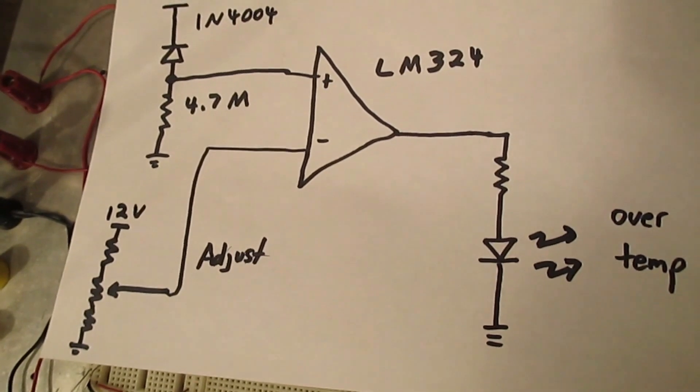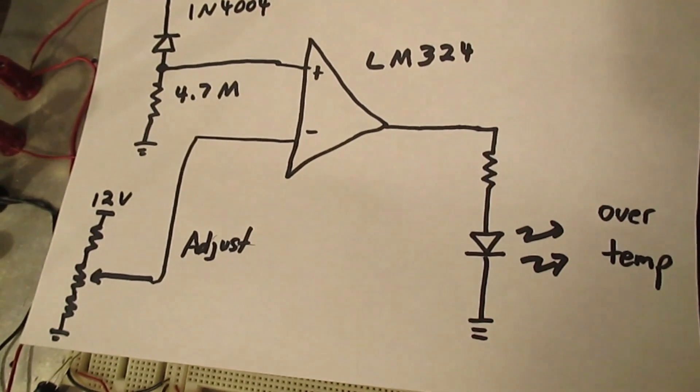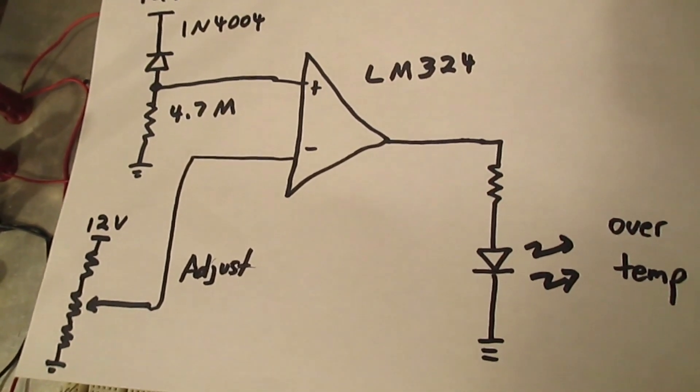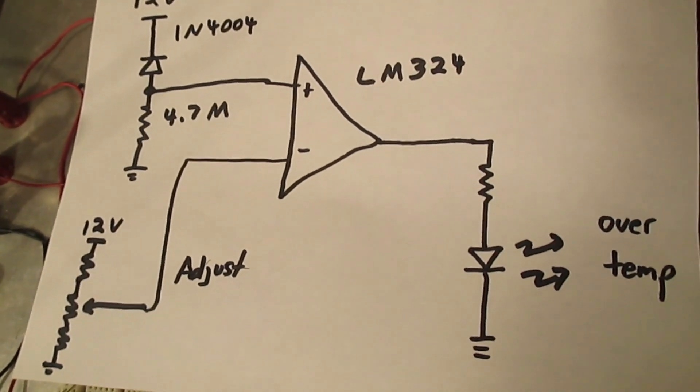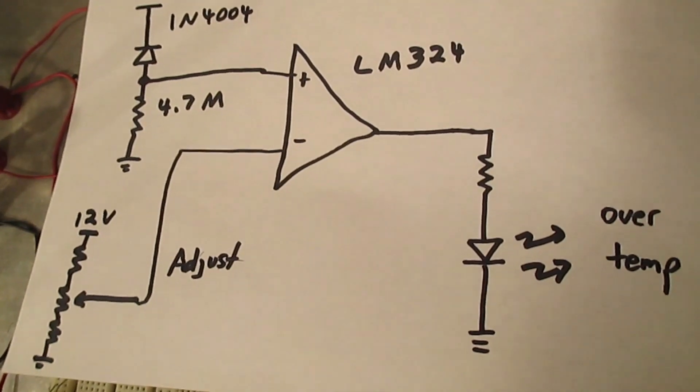The output will be shown using an LED. In this configuration it'll be a lit LED to indicate over temperature. You could reverse the polarity and have an active low output by switching the inputs of the op-amp.